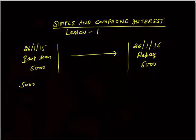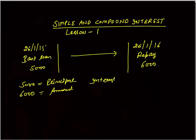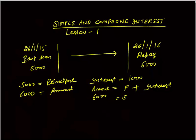This Rs. 5000 is called the principal — the initial amount of money you took as a loan. Rs. 6000 is the amount, and interest is Rs. 1000, which is the difference between the amount and the principal. So: Amount = Principal + Interest. You paid the bank Rs. 6000; Rs. 5000 was your principal and Rs. 1000 was your interest.